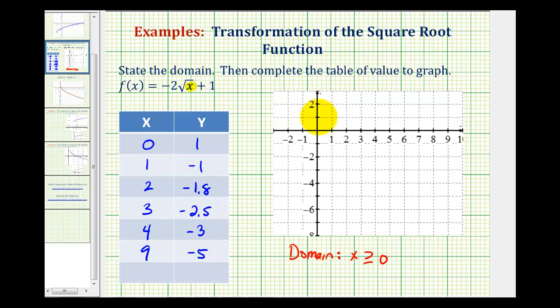We have zero, one; one, negative one. I'm going to go ahead and just use four, negative three, and nine, negative five. These four points are enough to make a nice graph of the function.